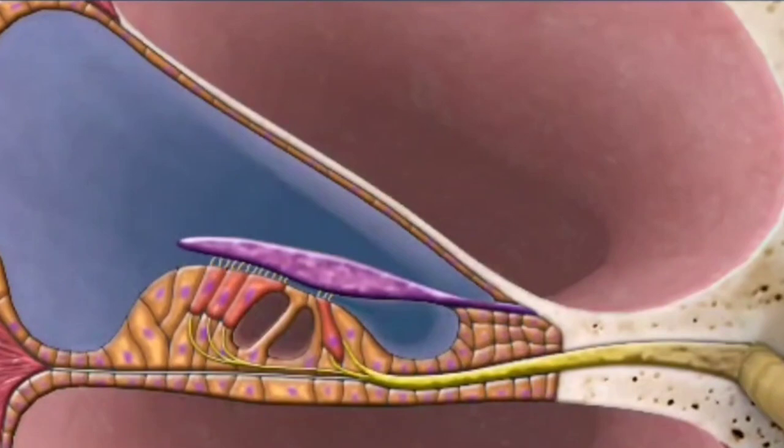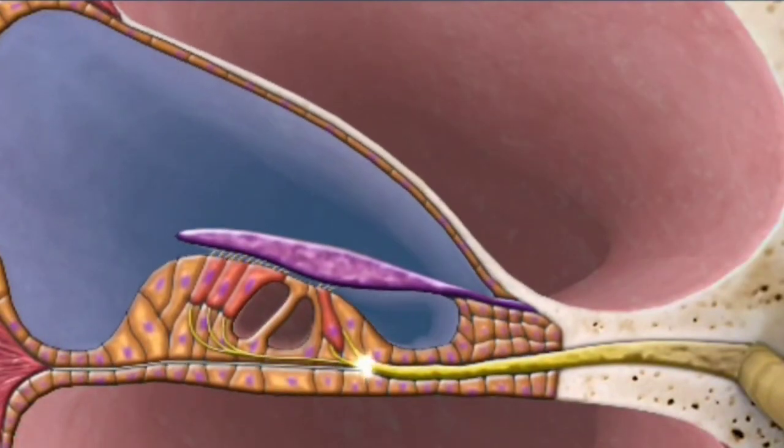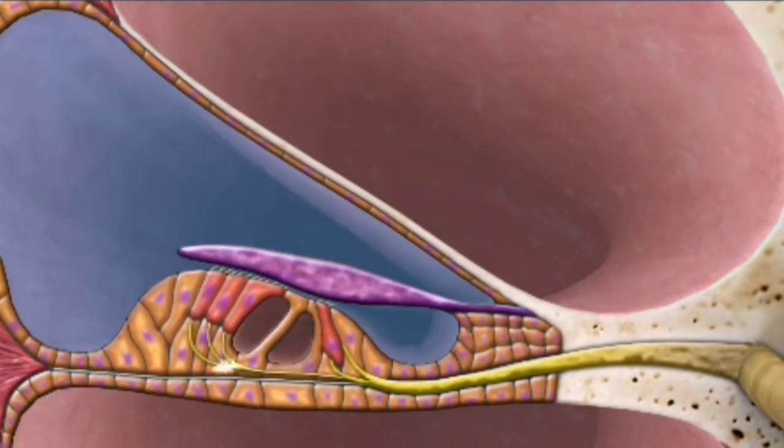What you see here is the organ of Corti. It's a structure in the cochlea of the inner ear which produces nerve impulses in response to sound vibrations.